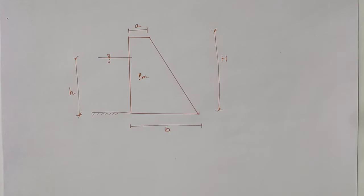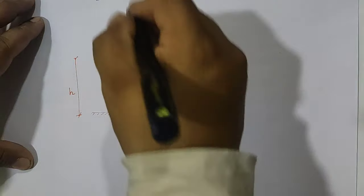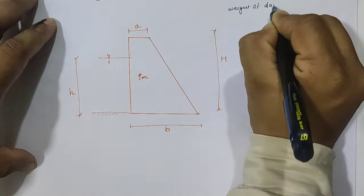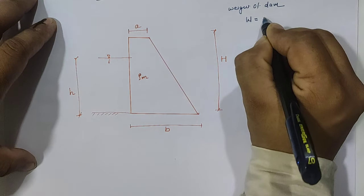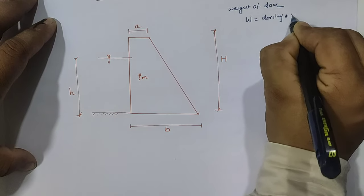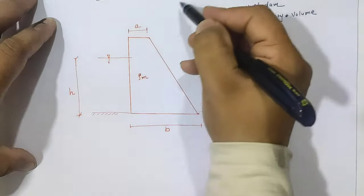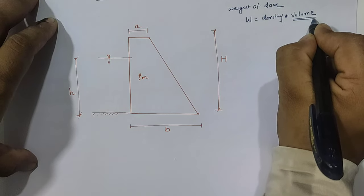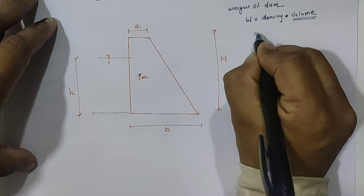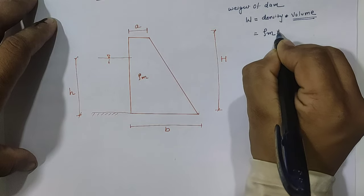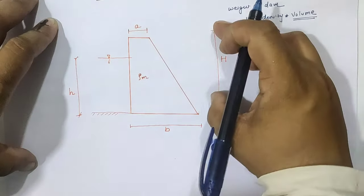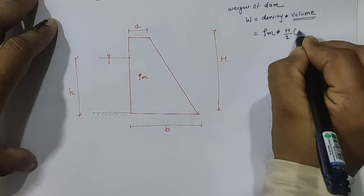For calculation of stress, first we require the load. For the dam, the downward compressive load is the self-weight of the dam. Weight of dam is calculated by density into volume, but since we do not have the length in the 3D direction, we use cross-sectional area into unit length. So weight W = del_m × (b + a) × h/2, which is the area of the trapezoid.